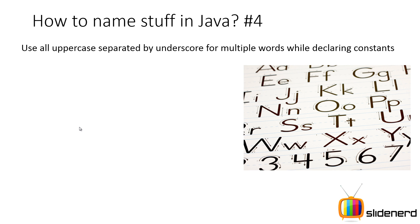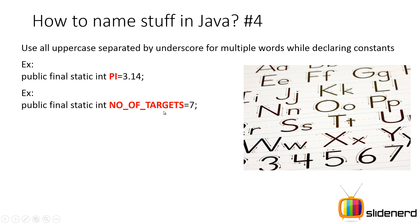For constants — values which don't change throughout the program — you use all uppercase letters. If you have a variable pi which is a constant, you'd say `public final static PI = 3.14`. If there are multiple words, like `NUMBER_OF_TARGETS`, you use all caps and separate the words with underscores so you can read them clearly. If the `final` and `static` keywords don't make sense yet, don't worry — I will explain them in a later video.